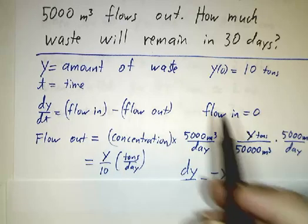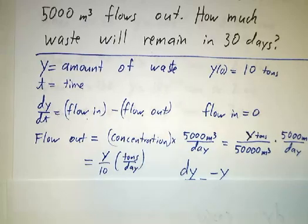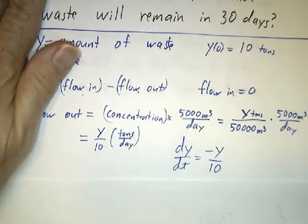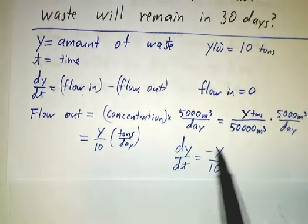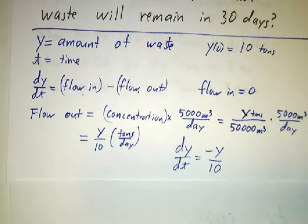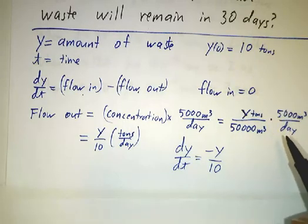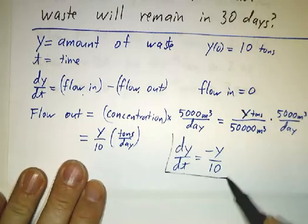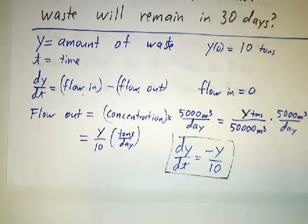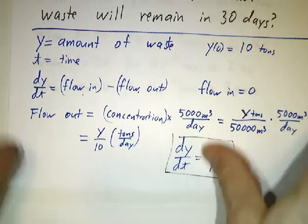Now, it's 0 minus y over 10, so our differential equation is dy/dt equals minus y over 10. So now, we've done the work of talking our way through the word problem, and we've turned the word problem into a differential equation. The next step is to solve the differential equation.